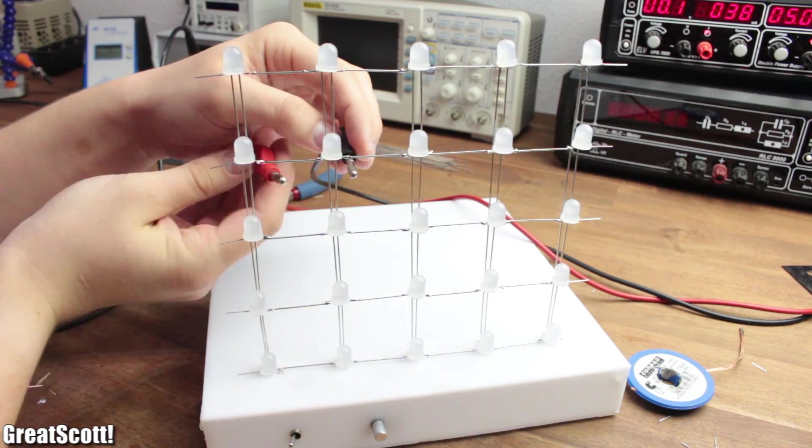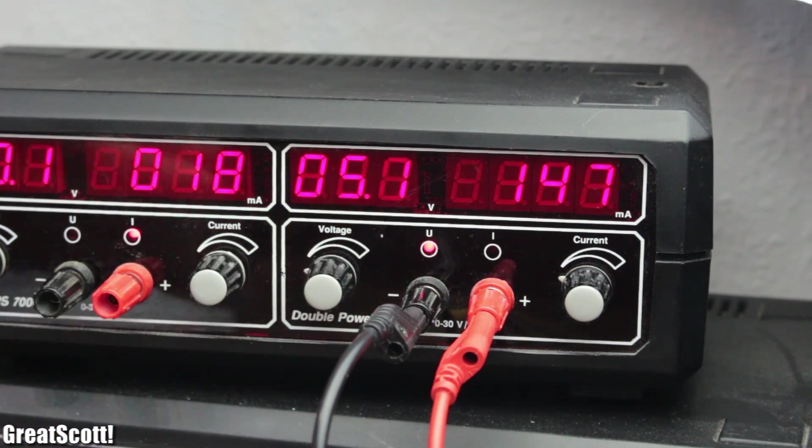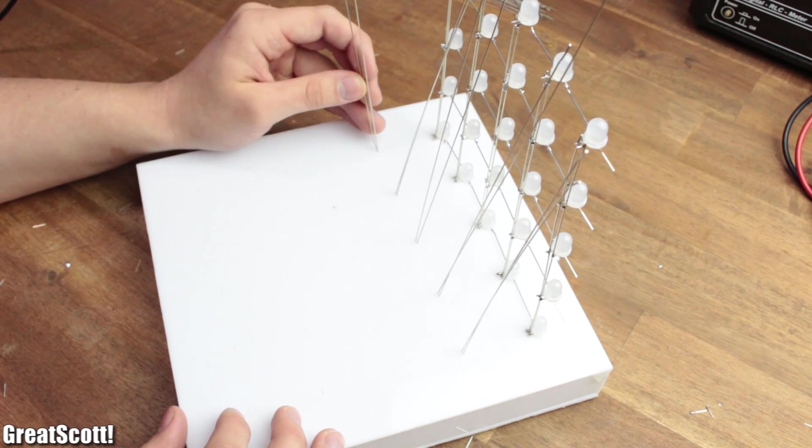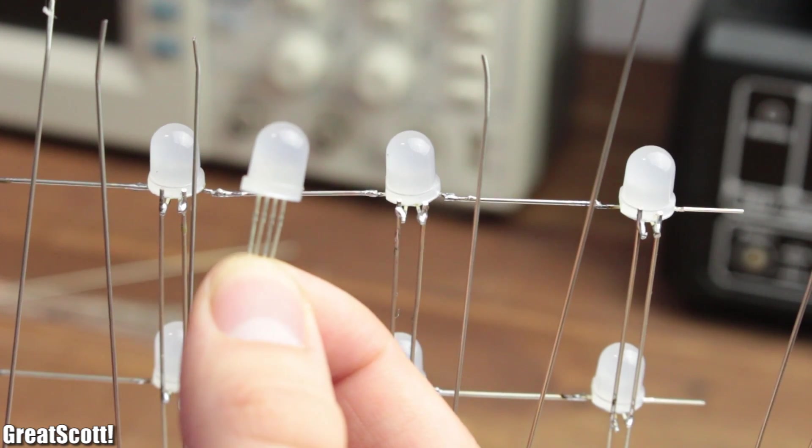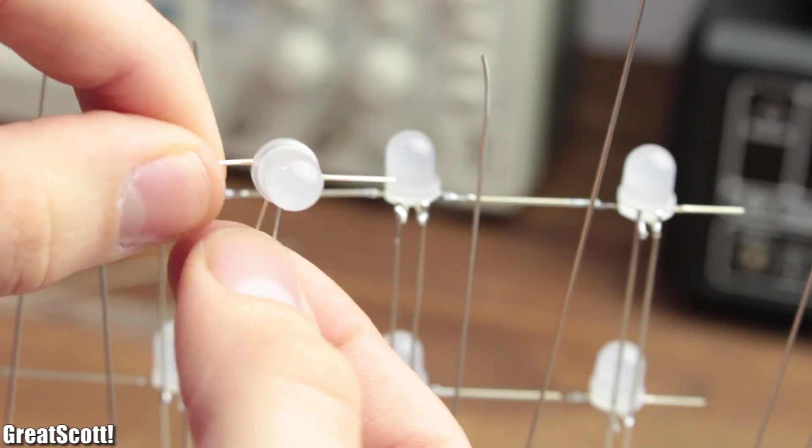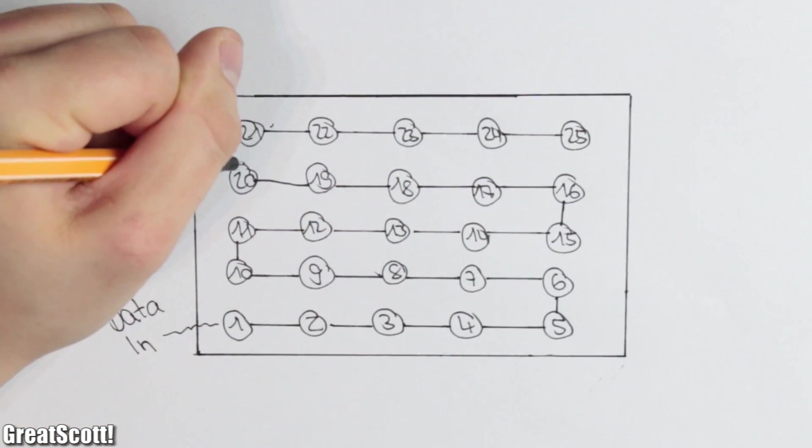And it is also a good idea to test the LEDs regularly with a 5V power source. Now we can begin the construction of the second wall. The only difference is that the flat side of the LEDs face the opposite direction than the LEDs of the first wall.